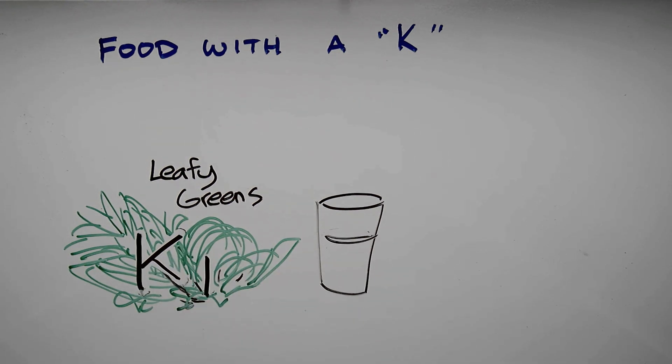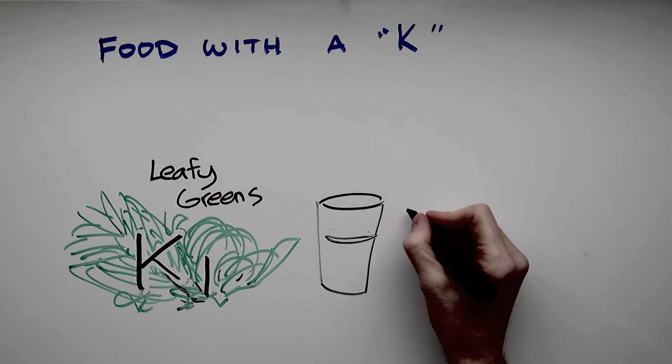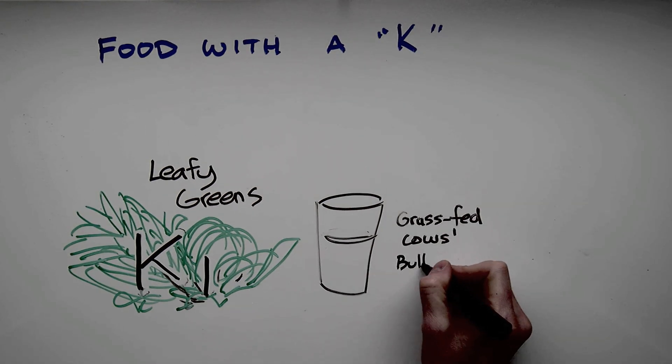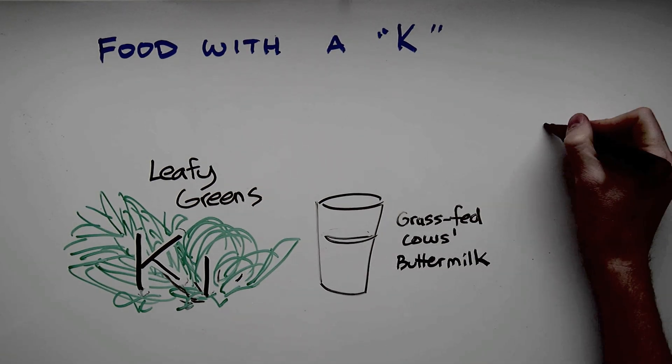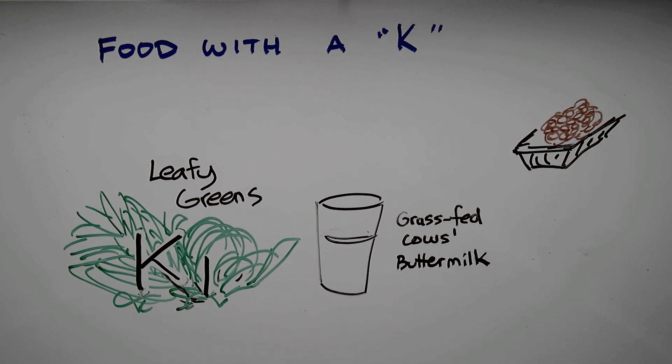Now we do convert some of our vitamin K1 to K2, but in the best case scenario only about six percent. Foods which are rich in vitamin K2? Well, Dr. Price found it was grass-fed cow's buttermilk—had to be grass-fed. Today we've also found another food rich in vitamin K2.